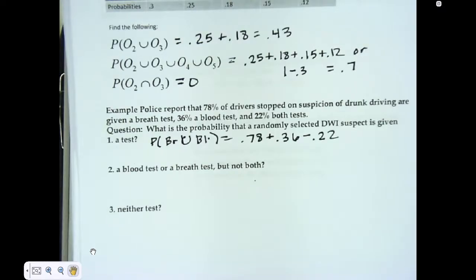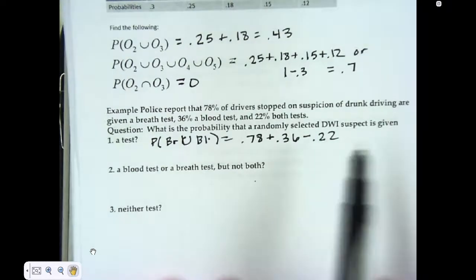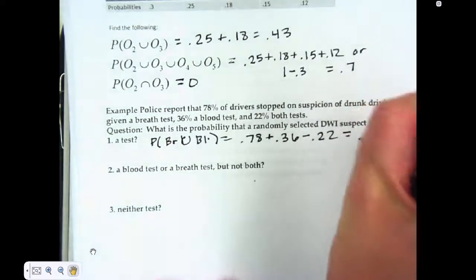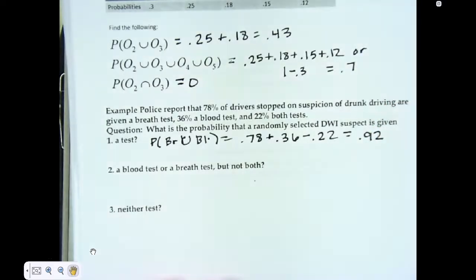Again, just like before, if I didn't subtract that 22%, you would be over 1, so you know you've done something wrong.